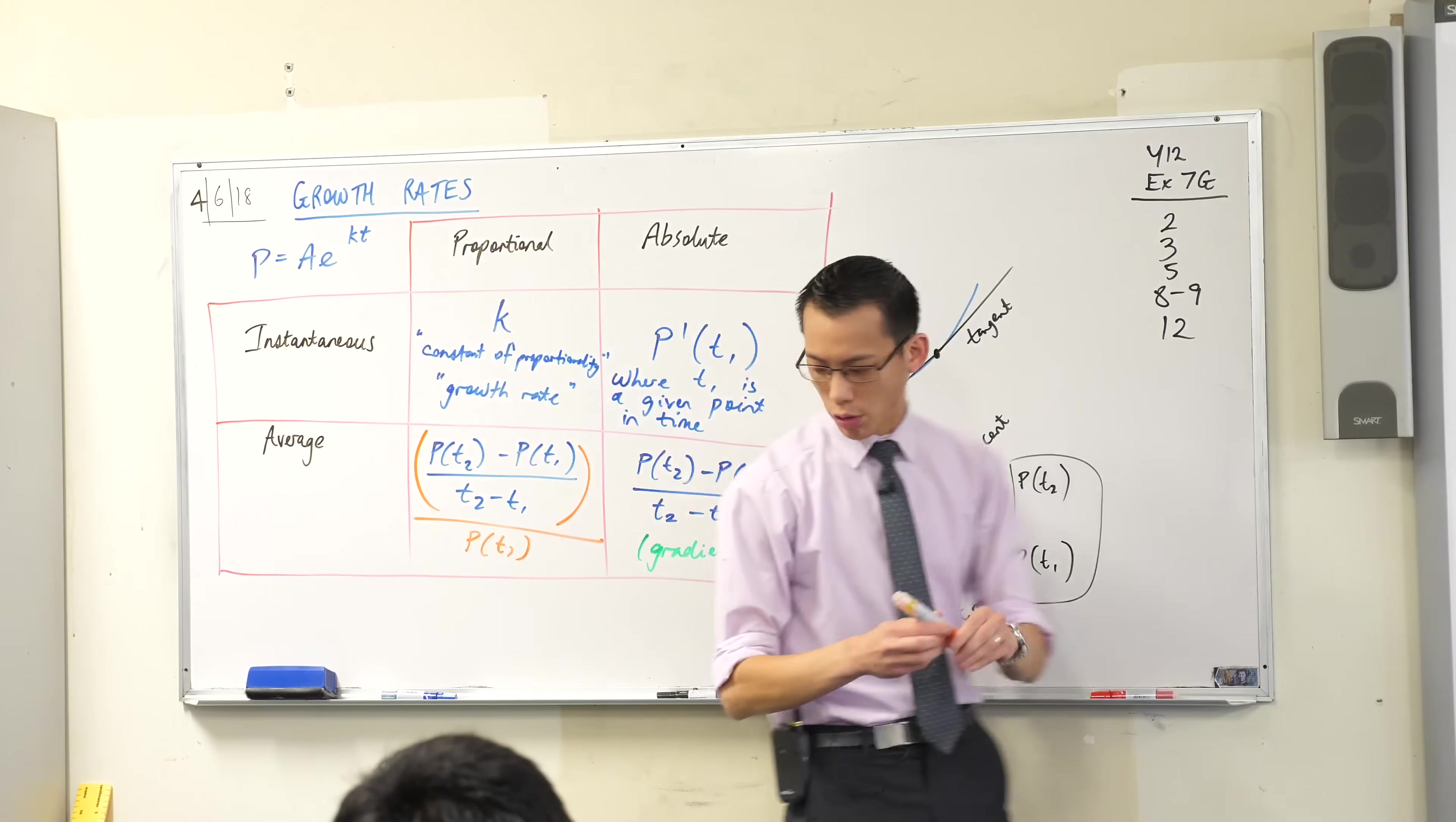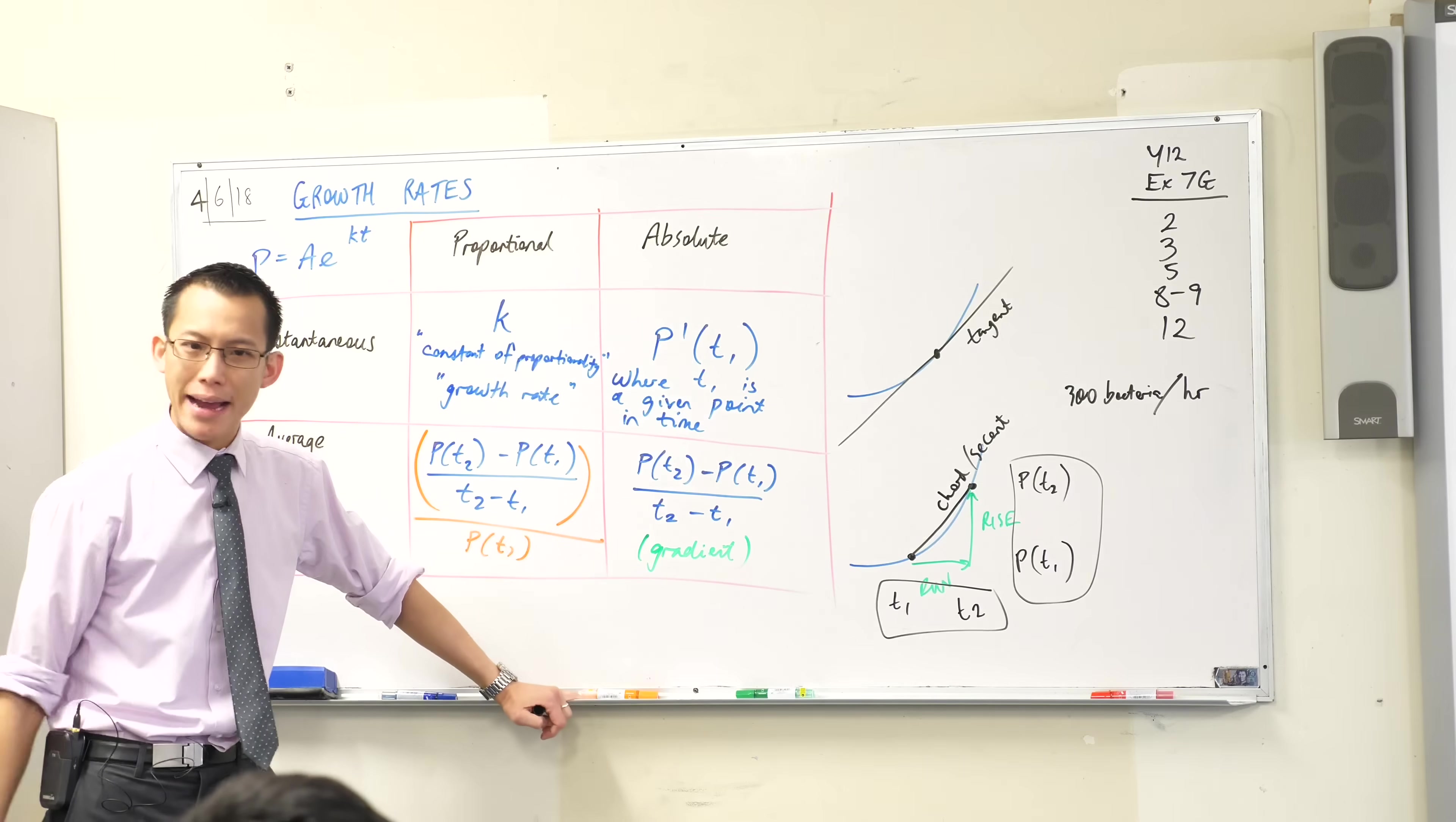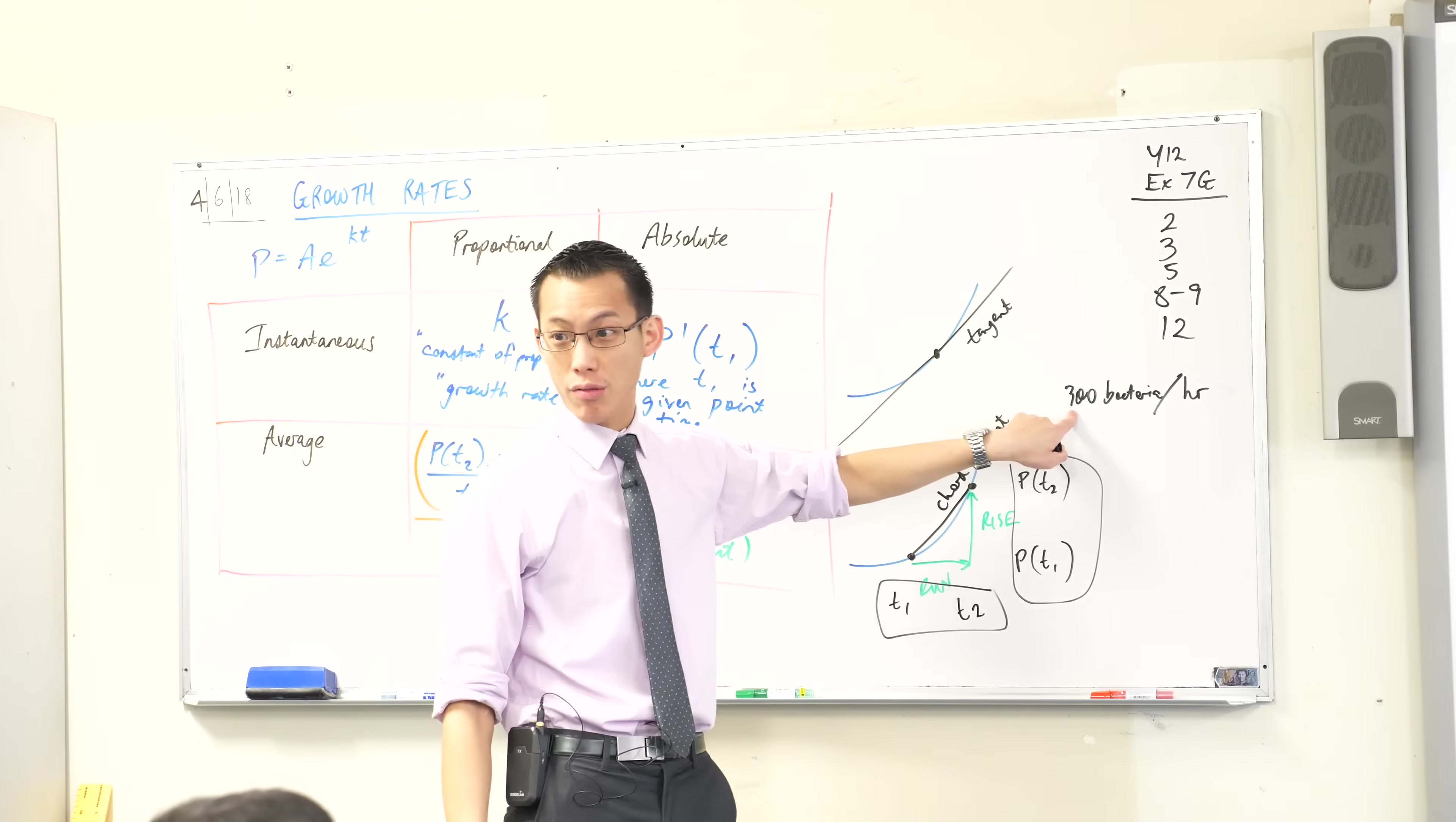So, for example, if I was just talking about the fact that you grew 300 new bacteria over the course of this hour. Is that a lot, or is that a little? Well, it depends on how many bacteria you started with. Does that make sense? Like, suppose I had a million bacteria in my body, and this is how fast they grew. Would you describe that as fast or slow? Super slow. Like, 300 out of a million, that's really slow. But if I started with 300, that means they've, over the course of the hour, they've doubled. That's pretty fast.